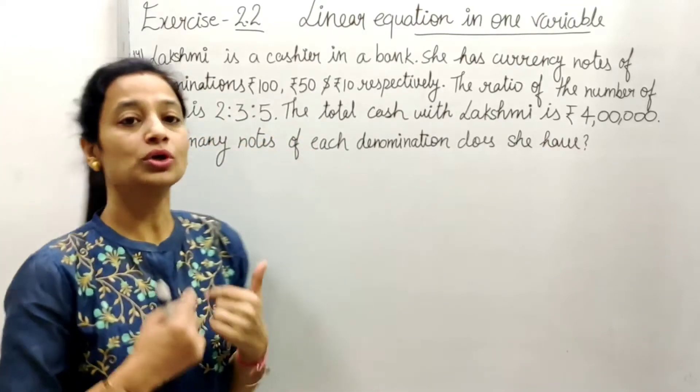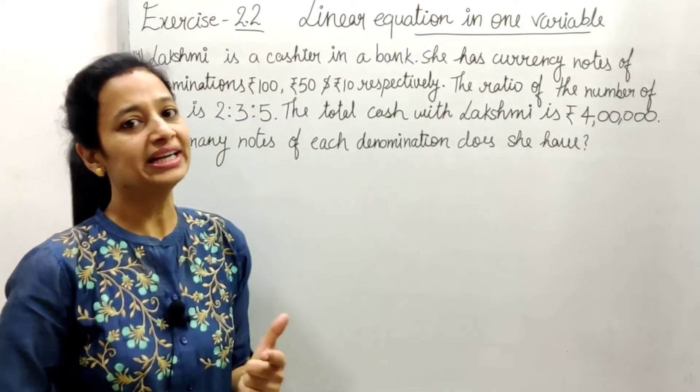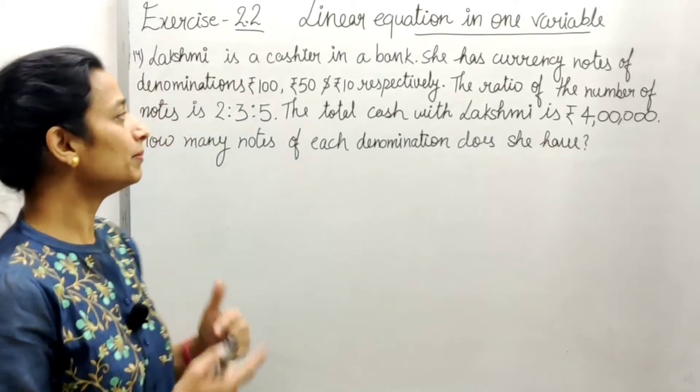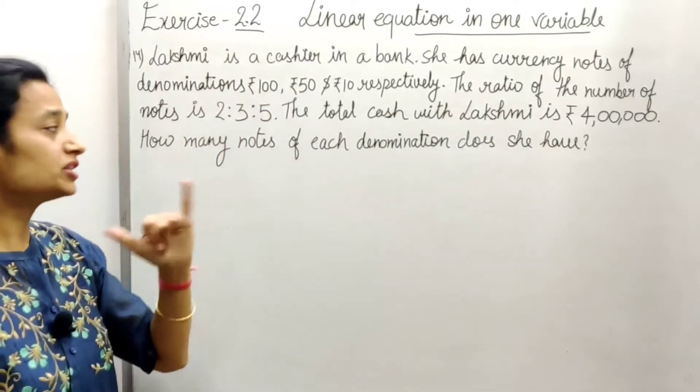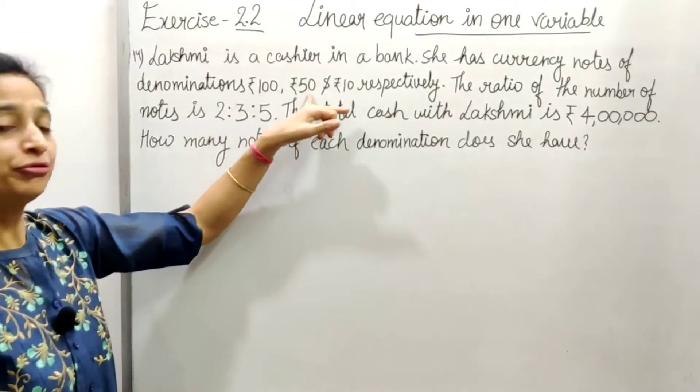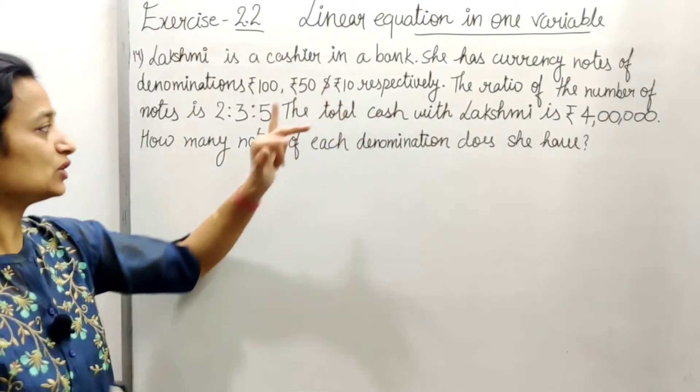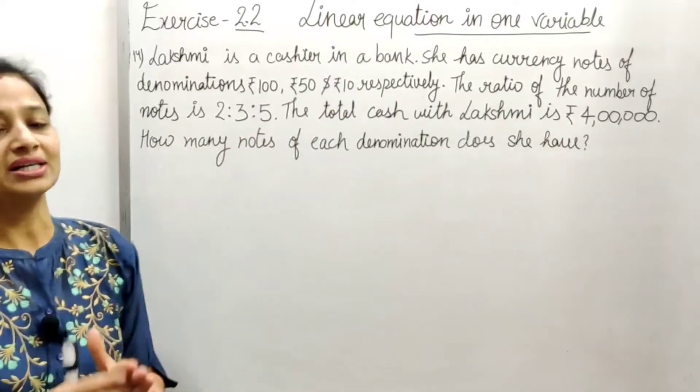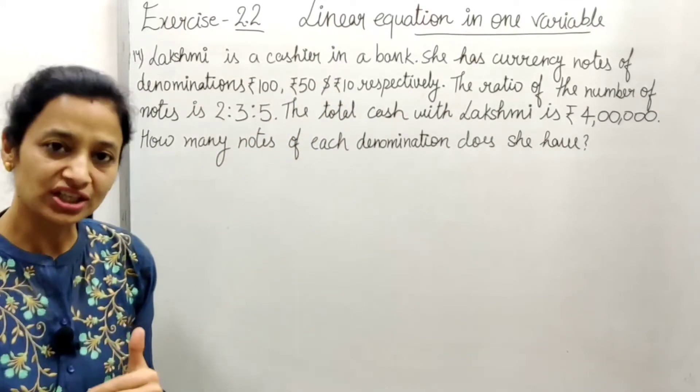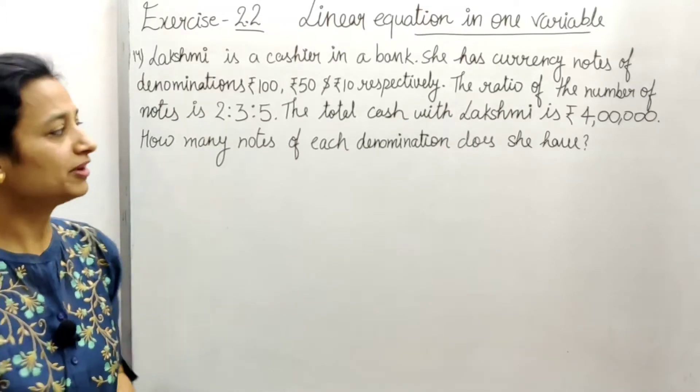From this given ratio, we will assume that the number of ₹100 rupees notes will be 2x, the number of ₹50 rupees notes will be 3x, and the number of ₹10 rupees notes will be 5x.